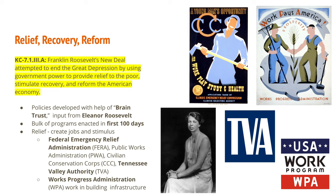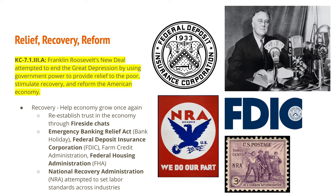That brings us to the next goal: recovery — helping the economy grow once again. One of the first goals was for people to regain trust in the financial system. Franklin Roosevelt would do fireside chats, going to a recording studio or the White House to talk to the nation about what the federal government was doing to make the Great Depression go away. As people saw the government being more proactive, they would be more willing to spend their money and put it in banks.